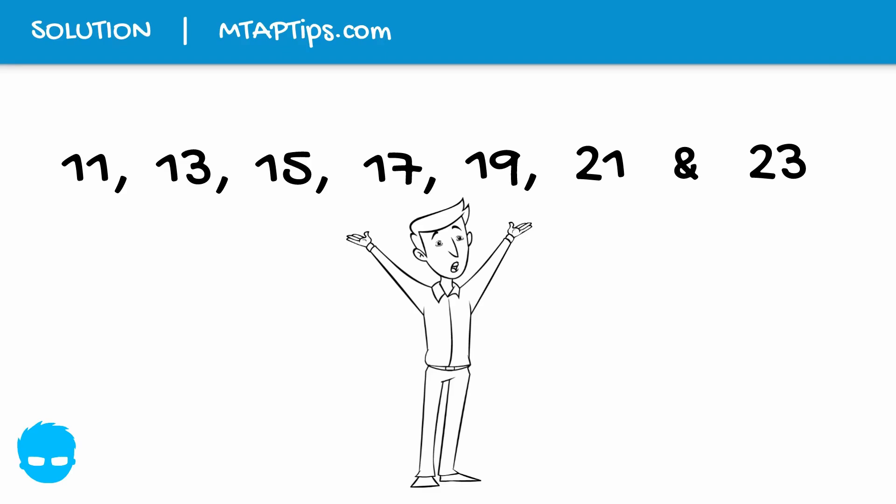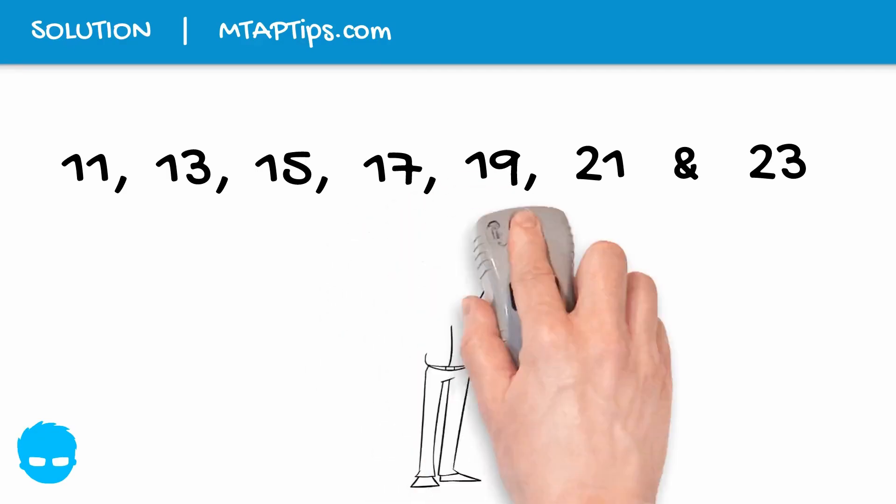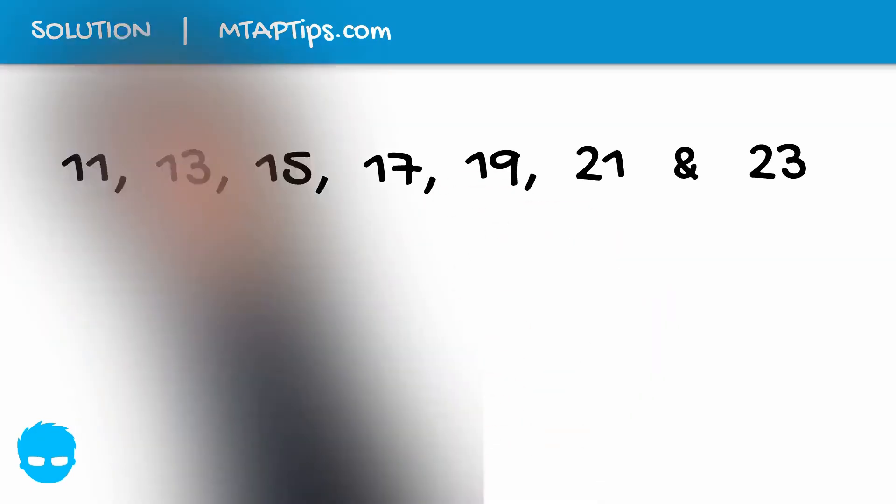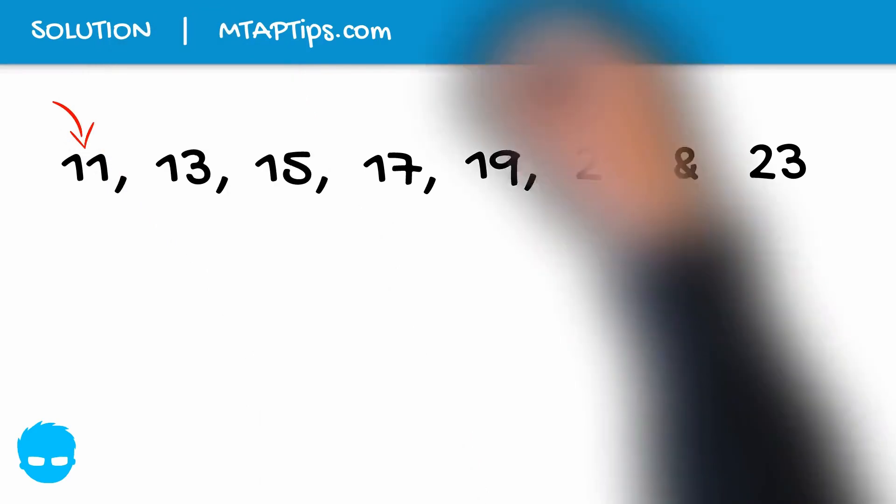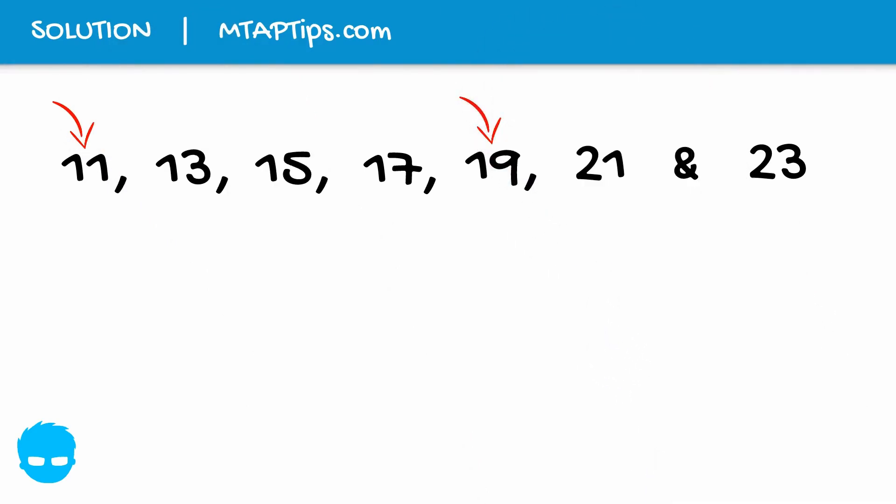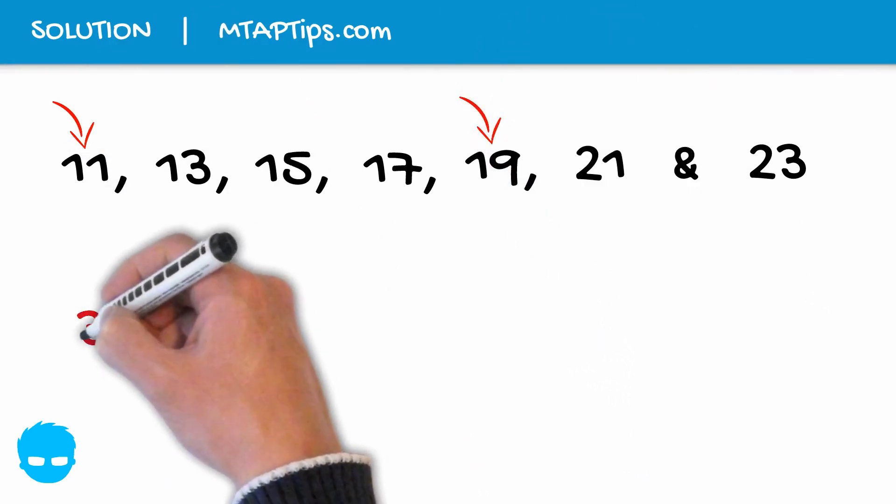But just to give you a quick tip, to be able for you to easily add these numbers or any multiple numbers, first try to find the numbers that when you combine, you will have a number that are divisible by 5 or 10 or whichever you prefer. But with this number, we have 11 plus 19 will have 30.